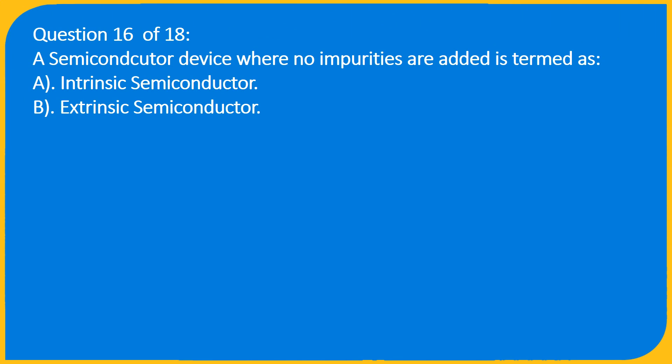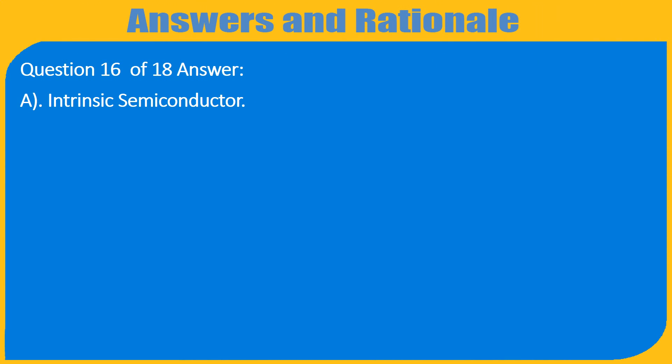Question 16 of 18: A semiconductor device where no impurities are added is termed as: A. Intrinsic semiconductor, B. Extrinsic semiconductor. Question 16 of 18 Answer: A. Intrinsic semiconductor.